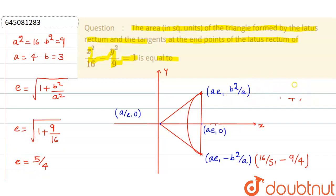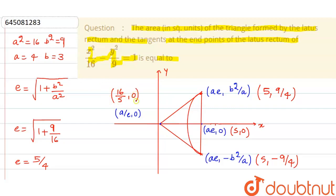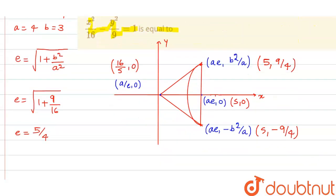With a = 4 and e = 5/4, the focus point ae = 4 × (5/4) = 5. So the latus rectum endpoints are (5, 9/4) and (5, −9/4). The tangent intersection point is (a/e, 0) = (4 ÷ 5/4, 0) = (16/5, 0).